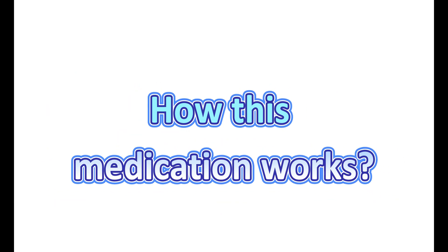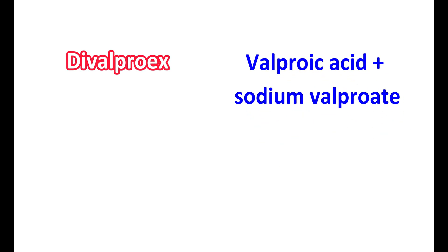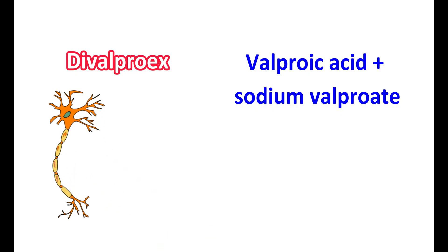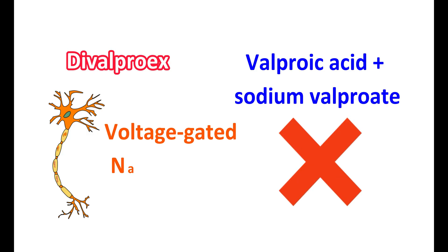Let us see how this medication works. Divalproex is a combination of valproic acid and sodium valproate. When admitted into the body, it is released as valproic acid, so most of the actions of divalproex are due to valproic acid. This medication inhibits neuronal activity by multiple mechanisms. One action is to block voltage-gated sodium channels, which reduces neuronal conduction as well as excitation.